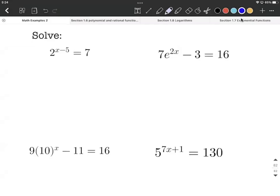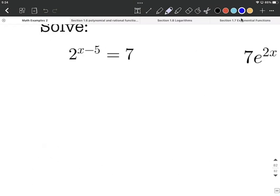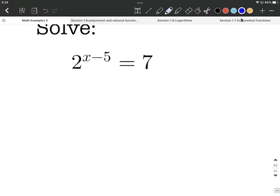In this video, we're going to solve four exponential equations. Each one is slightly different than the other ones. All right, so let's start out with 2 raised to the x minus 5 power equals 7.